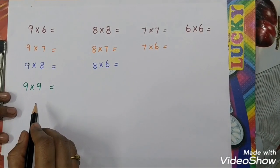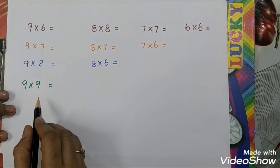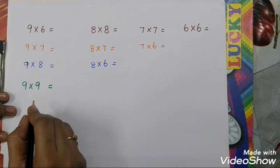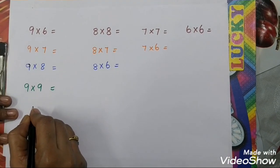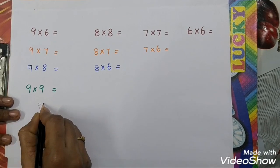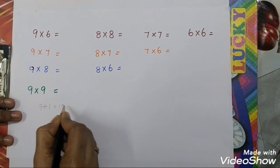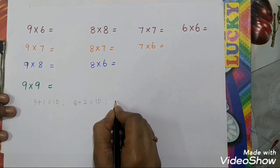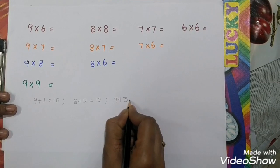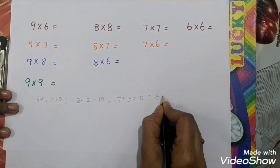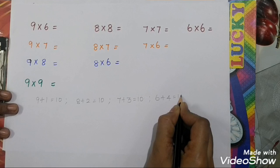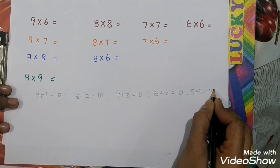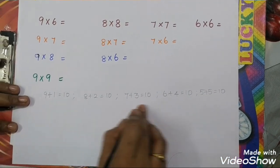This is the second method — how to write the 6 to 9 table. We need pairs that make 10. So: 9 plus 1 equals 10, 8 plus 2 equals 10, 7 plus 3 equals 10, 6 plus 4 equals 10, 5 plus 5 equals 10. This is the 10-combination.